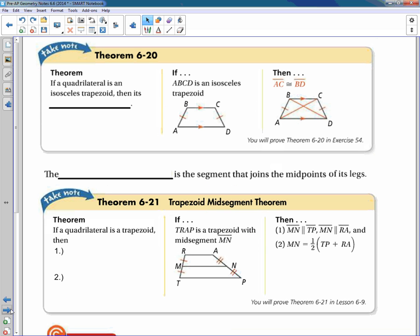Okay. So let's go through the next theorem. This one has to do with the isosceles trapezoid. And the other thing we know about the isosceles trapezoid is that the diagonals are congruent. Okay? So the diagonals are congruent. Okay? What other quadrilateral has congruent diagonals? The rectangle.